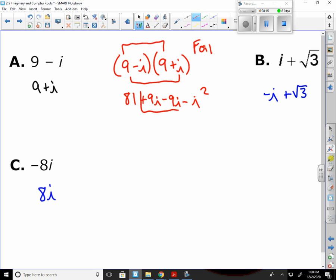Now, if I combine my like terms in the middle, positive 9i minus 9i, those are going to cancel each other out. And I have 81 minus i squared.